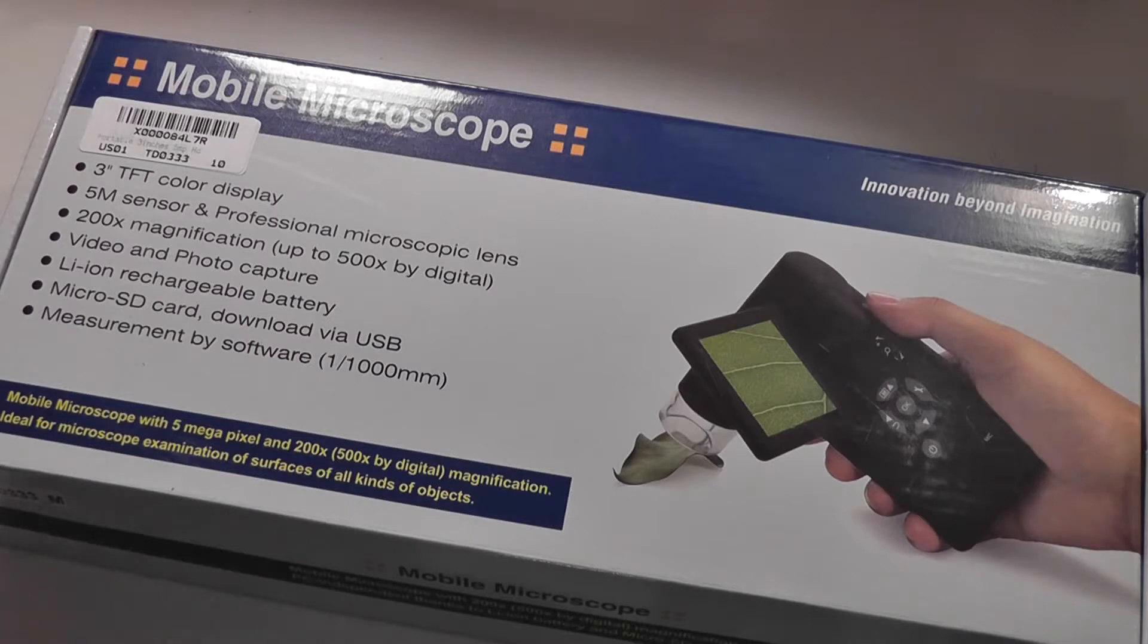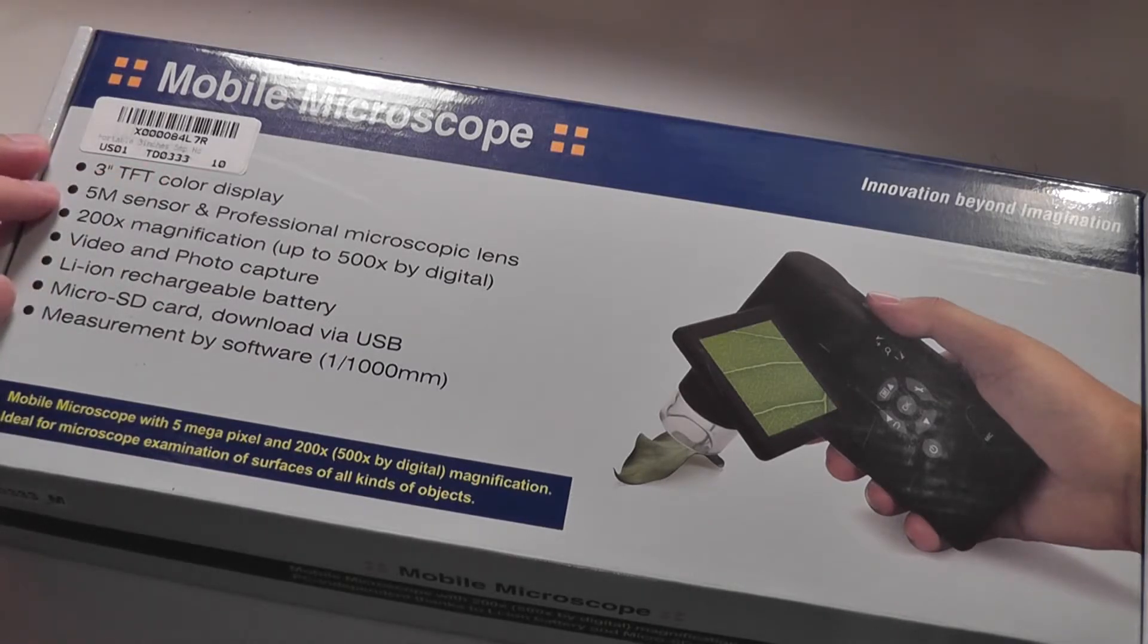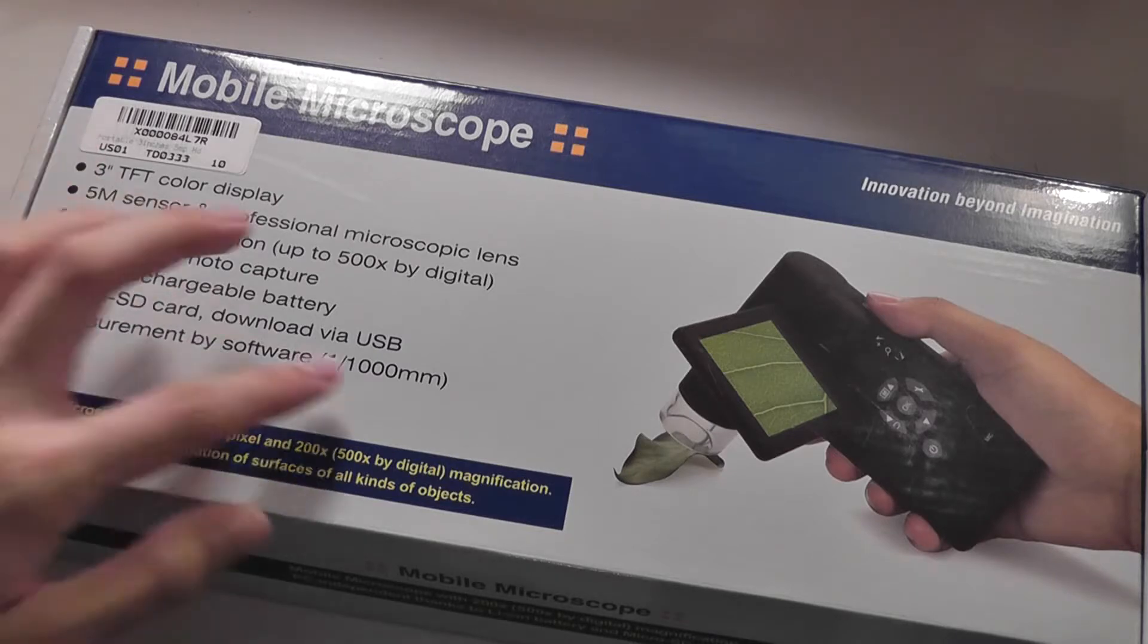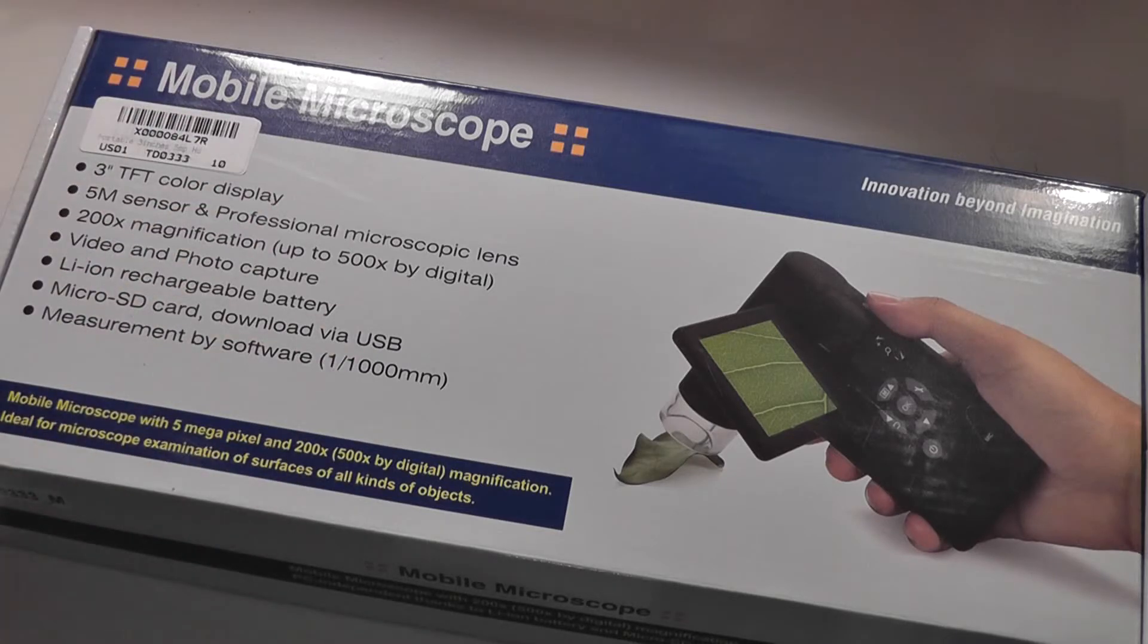Taking a look at the specifications, there's a 3-inch TFT LCD display on the front, and you have the ability to capture 12 megapixel images. The 5 megapixel here is an error. There's also up to 200 times of magnification, 500 times by digital magnification, so 200 is optical. There's also photo and video capture on board.